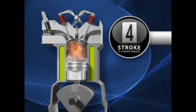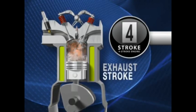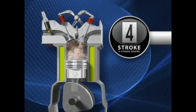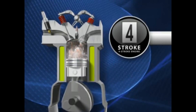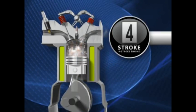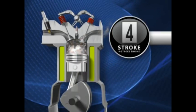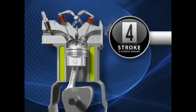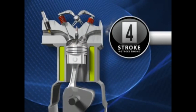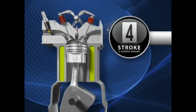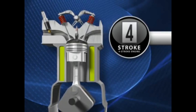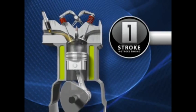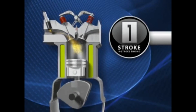The fourth stroke is the exhaust stroke. As the piston travels upward, the exhaust valve opens to release the burned air-fuel mixture. When the piston reaches the top of this stroke, the intake valve opens and the cycle begins all over again.